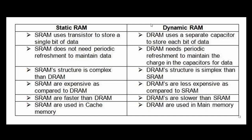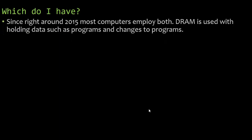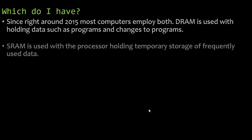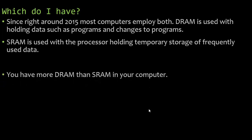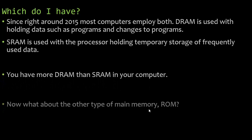There's a chart comparing static RAM and dynamic RAM where you can easily compare and contrast them. SRAM is used in cache memory, while DRAM is used in main memory. Since around 2015, most computers employ both. DRAM is used for holding data such as programs and changes to programs, while SRAM is used with the processor for temporary storage of frequently used data. You typically have more DRAM than SRAM in your computer.